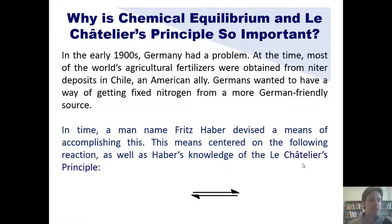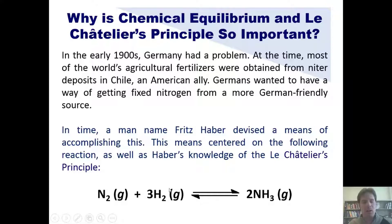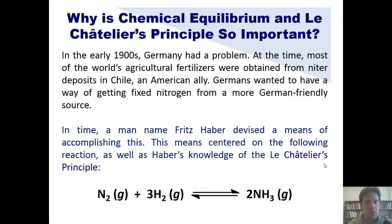Germans wanted a way to get fixed nitrogen from a more German-friendly source, and a man named Fritz Haber devised a means of accomplishing this using the following reaction and his knowledge of Le Chatelier's principle. Nitrogen gas N2 and hydrogen gas in a closed vessel will eventually reach equilibrium forming NH3 — ammonia — a useful form of fixed nitrogen. The problem is that this equilibrium strongly favors the left side, leaving only a tiny amount of NH3 and a large amount of reactants.